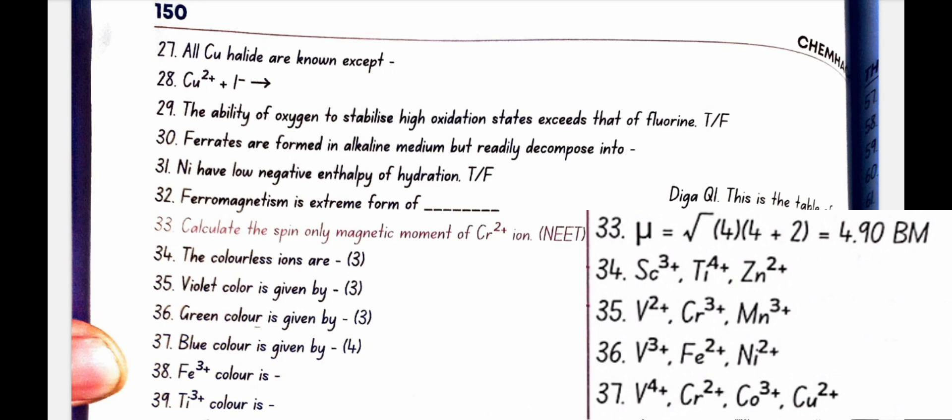Violet colour is given by V2 plus, Fe2 plus, Ni2 plus.